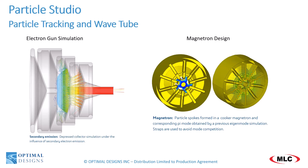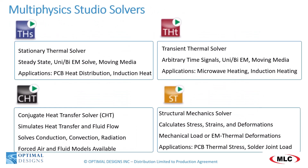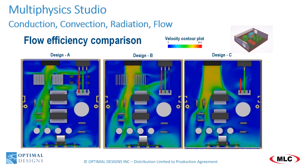Moving on to multi-physics, the solvers include stationary thermal, transient thermal, conjugate heat transfer solver for CFD, and structural mechanical solver. The stationary and transient thermal solvers are very quick and accurate assuming the correct approximation is made from the heated surface boundary to air. When a more complicated approach is needed, the conjugate heat transfer solver employs computational fluid dynamics to simulate thermal conduction, convection, and radiation simultaneously in transient or steady-state regimes, and can incorporate fluid flow cooling models for both air and liquids.